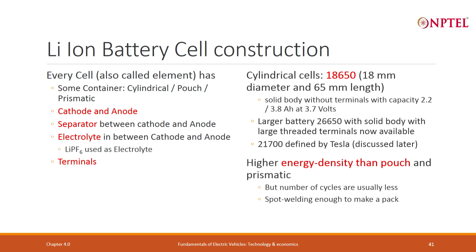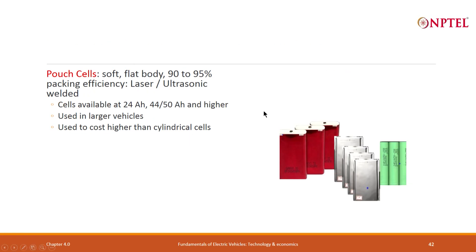Cylindrical cells have higher energy density than pouch and prismatic when first introduced. The first 300 Wh/kg cells will always be cylindrical cells, but soon pouch and prismatic will pick up, though number of cycles are less. All you need is spot welding to make a pack — very easy. Here are pictures: this is the cylindrical cell, this is the pouch cell, and this is the prismatic cell.